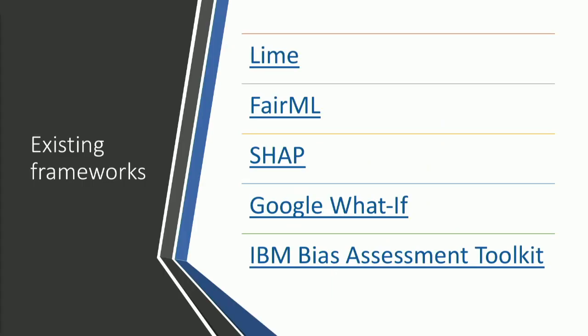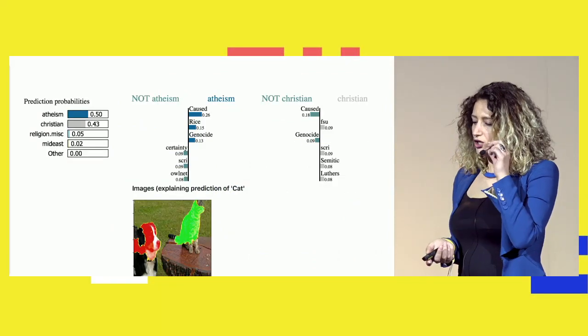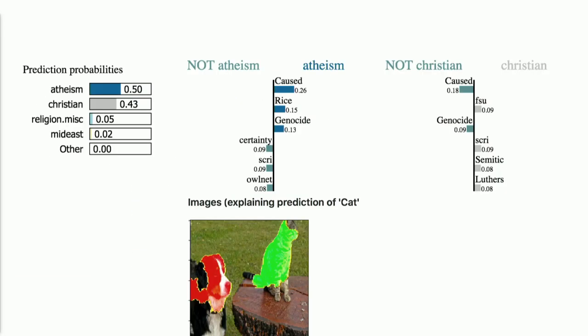Over the past year, frameworks have been developed to show you how the AI model is classifying examples. Some of them are LIME, FairML, SHAP, Google What-If, and IBM Bias Assessment Toolkit. Here is an example of the LIME framework, showing a classification between religious people and atheists starting from text — it shows what words the algorithm used to classify between the two groups.